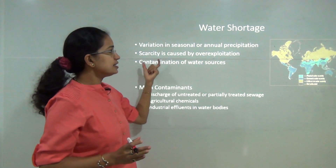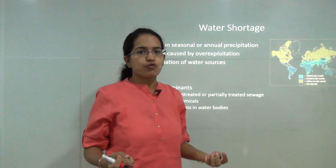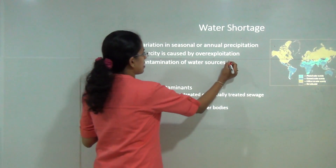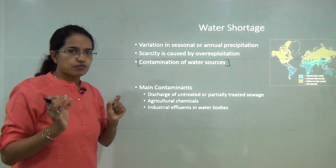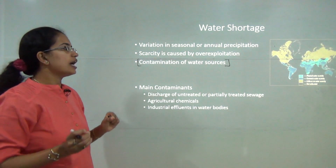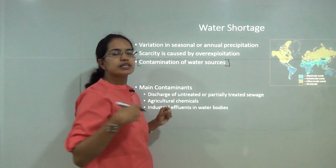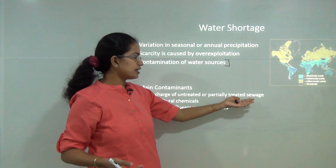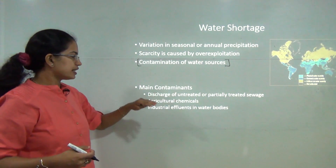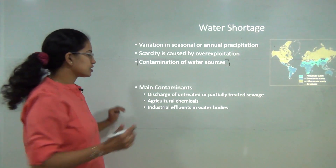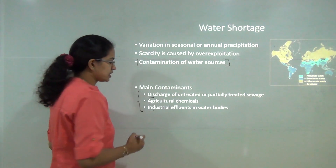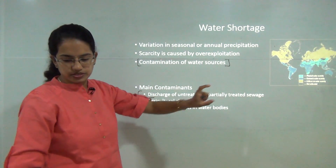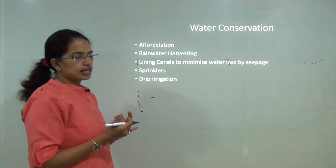Over-exploitation and wastage of water contribute to scarcity. The most critical issue today is contamination of water sources. The one percent of water fit for human use is being severely contaminated. The three main causes are discharge from untreated sewage, agricultural chemicals, and industrial effluents or waste.